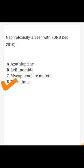Moving to other options: azathioprine is a prodrug and can also cause nephrotoxicity as tubular nephritis, but this is less common than with tacrolimus. The most prominent side effect of azathioprine is bone marrow depression. Leflunomide is an immunomodulator used in severe rheumatoid arthritis and causes severe side effects including interstitial lung disease and myelosuppression. Mycophenolate mofetil's most common side effects are GI upset and bone marrow depression; its mechanism is inosine monophosphate dehydrogenase inhibition.